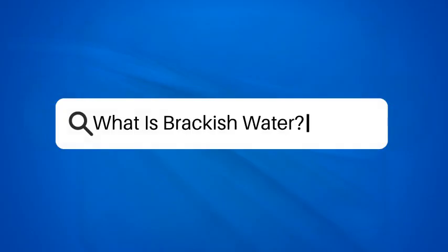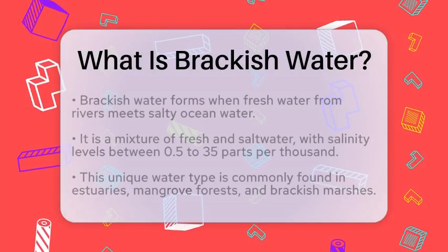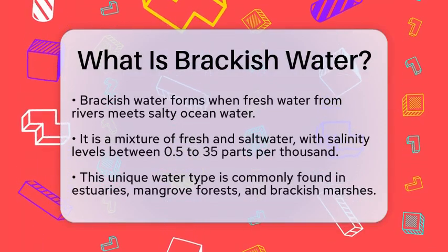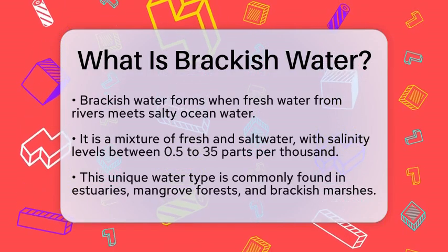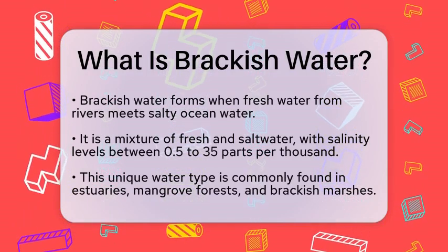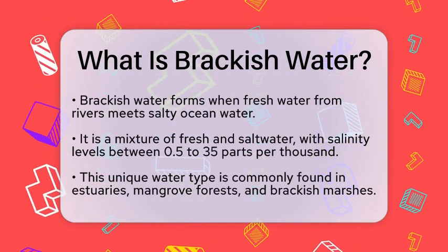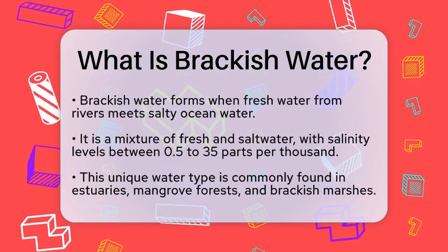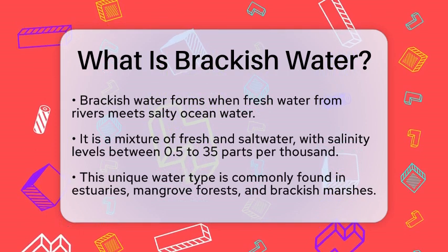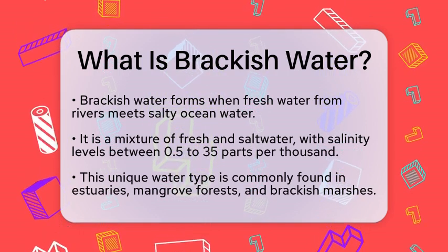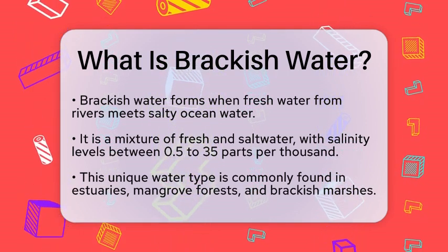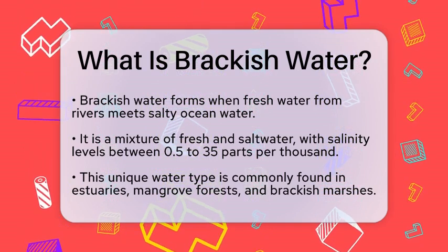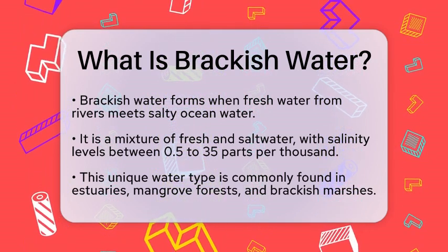What is brackish water? Have you ever wondered what happens when fresh water from rivers meets salty water from the ocean? This fascinating interaction creates a special type of water known as brackish water. Brackish water is a blend of fresh and salt water, making it more saline than freshwater but less saline than seawater. You can often find this unique water in estuaries, where rivers flow into the sea, as well as in mangrove forests and brackish marshes.